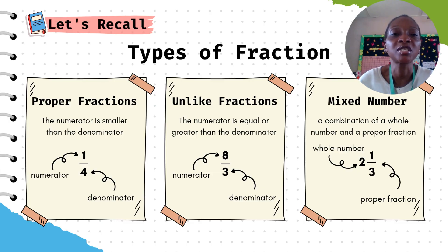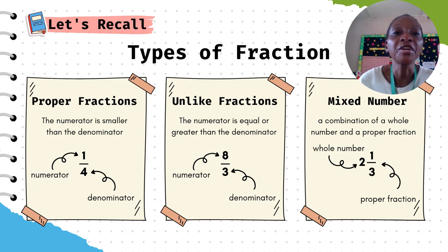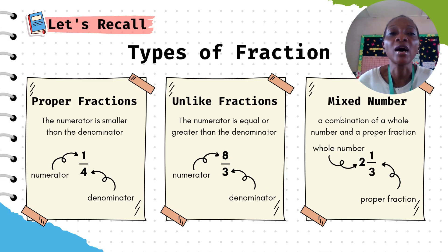Another type of fraction is improper fraction, or you can call it unlike fraction, where the numerator is equal to or greater than the denominator. For example, you have 8 over 3, where 8 is your numerator and 3 is your denominator.